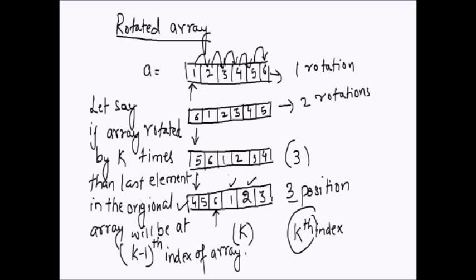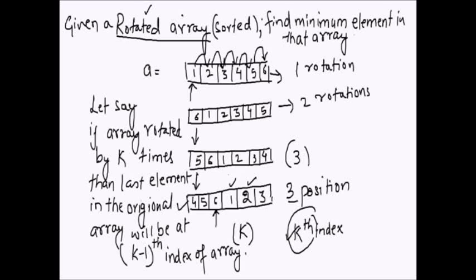If we know how many rotations have been done, finding the minimum is straightforward. But what if we don't know k? The problem statement is: given a rotated sorted array — the original array was sorted but then rotated — find the minimum element. Finding the minimum index is equivalent to asking how many rotations the array has gone through.